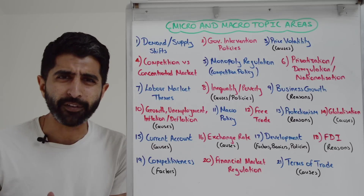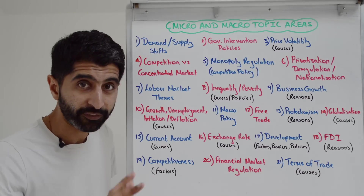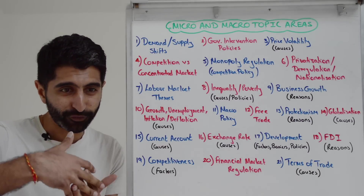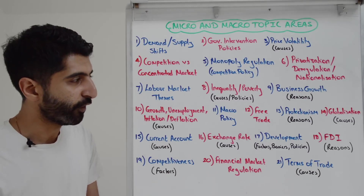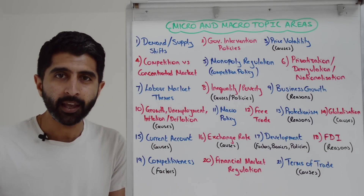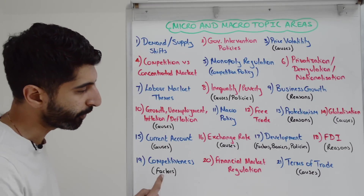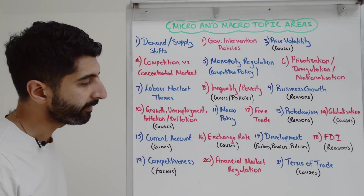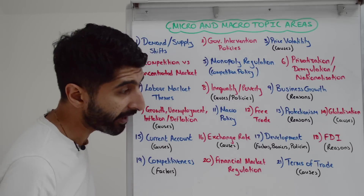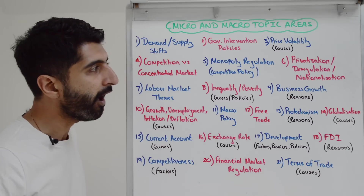Development is a very, very big Paper 3 topic area — it can be micro/macro in so many different areas. For example, factors and barriers to development, policies or strategies that can be used to promote development are often micro or macro in nature, and then the effects of those policies or strategies. FDI — the effects, yes, but also reasons why a company may want to invest in a country that isn't their own. Competitiveness — the effects but also the factors that can promote or improve competitiveness. The effects of financial market regulation and policies to regulate financial markets, and also effects of a change in the terms of trade but also causes of a change in the terms of trade.